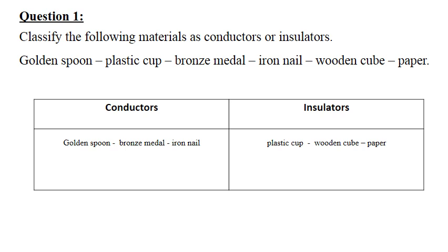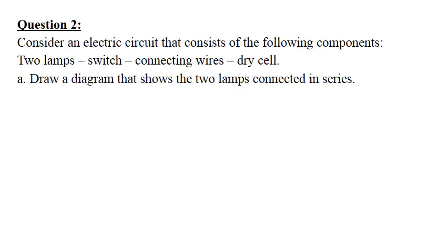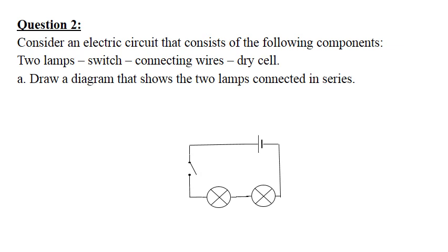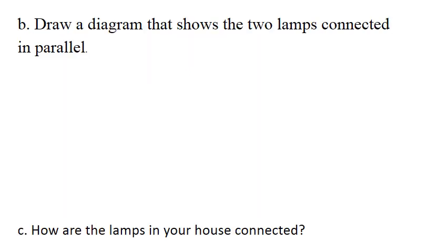Question two: consider an electric circuit consisting of two lamps, connecting wires, and a dry cell. Part A — draw a diagram showing two lamps connected in series. In series, the lamps should be adjacent to each other, as shown in the series grouping diagram.